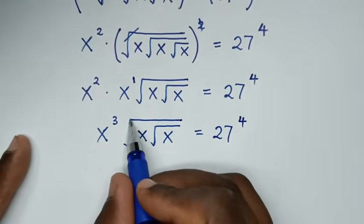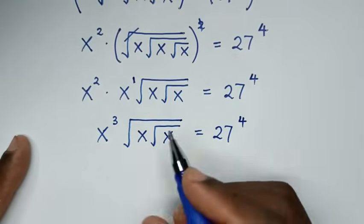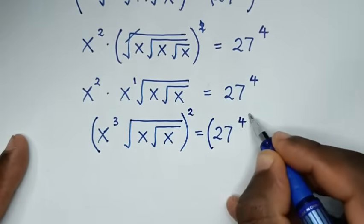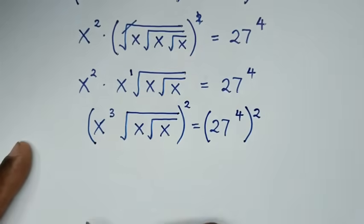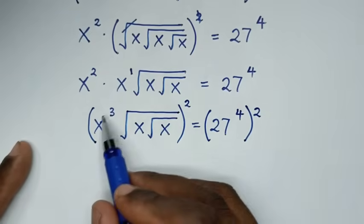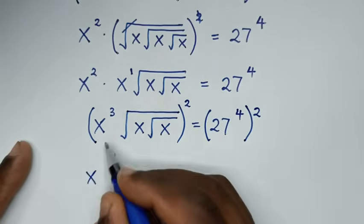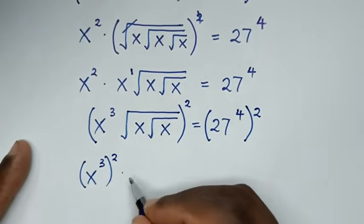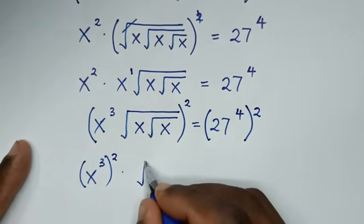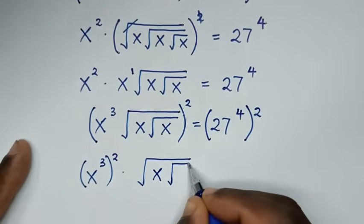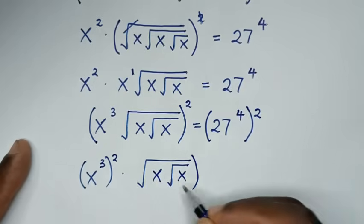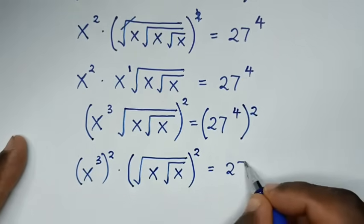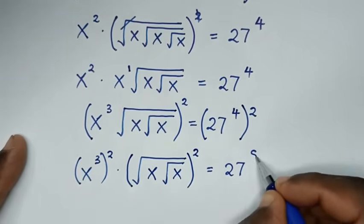Then in the next step, to remove this square root here, we'll apply square on both sides — bracket square on both sides. So this square will be taken into both parts: it will be x to the power of 3, bracket squared, times square root of x under square root of x, bracket squared, is equal to 27 to the power of 4 times 2, which is power of 8.